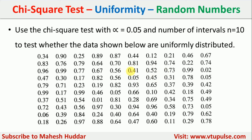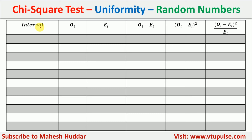To do that, we need to prepare a table. The first column contains the intervals. The second column contains the observed instances (OI) in each interval. The next column contains the expected instances (EI). Then we calculate OI minus EI, then (OI − EI)², and finally (OI − EI)² divided by EI. The chi-square value is the summation of (OI − EI)² divided by EI over all intervals.